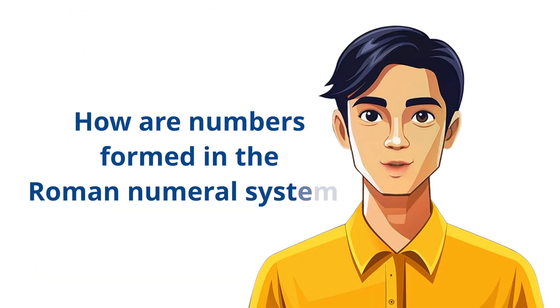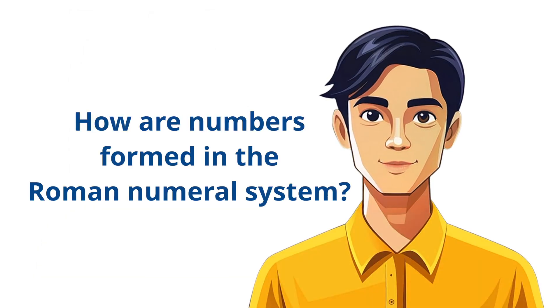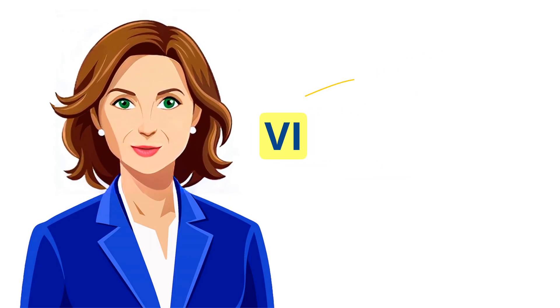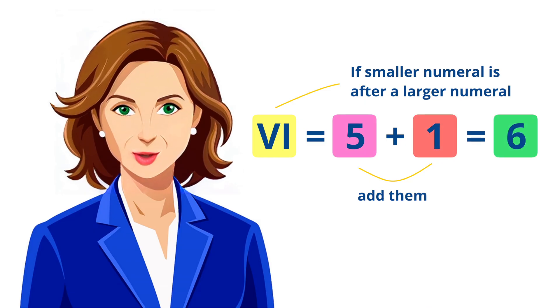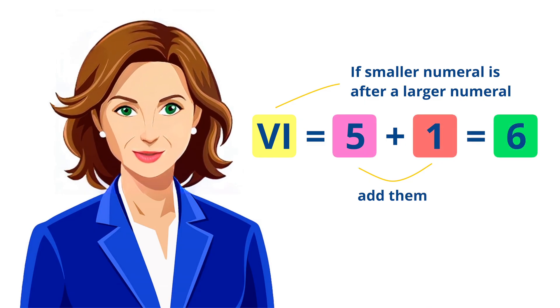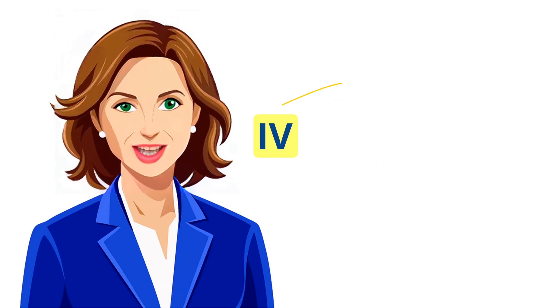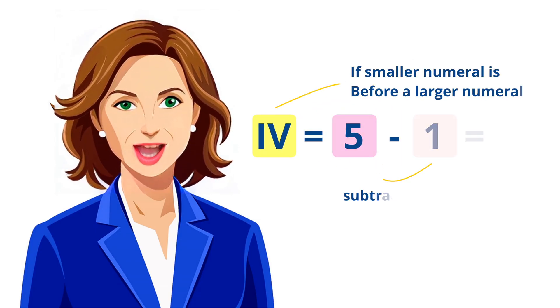So how are numbers formed in the Roman numeral system? Roman numerals are created by combining symbols and following specific rules. Addition rule: if a smaller numeral is after a larger numeral, you add them. Example: VI equals 5 plus 1, which equals 6. Subtraction rule: if a smaller numeral is before a larger numeral, you subtract it.